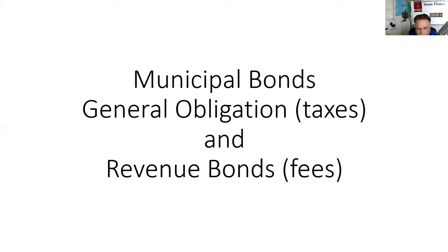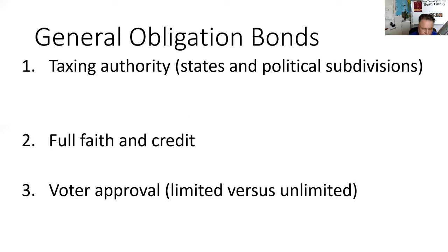I would recommend you take a sheet of paper, fold it in half, and on one side write all the terms associated with GO bonds, and on the other side all the terms associated with revenue bonds. Because a big part of your exam in this area is being able to contrast GOs with revenues.